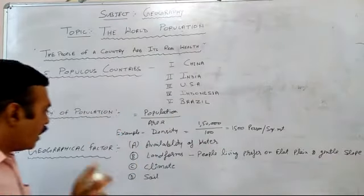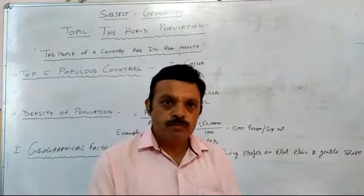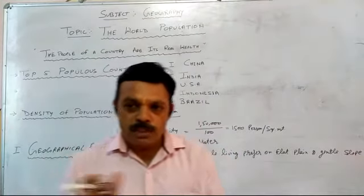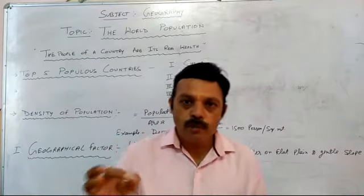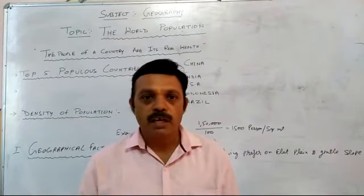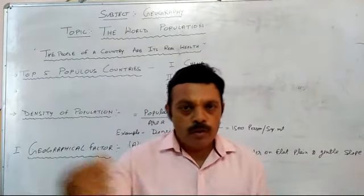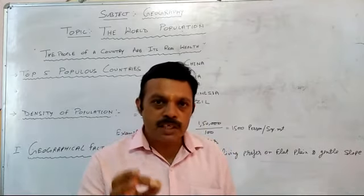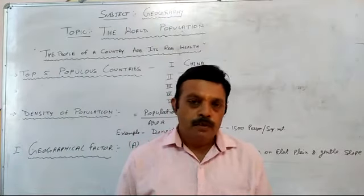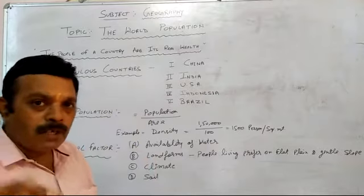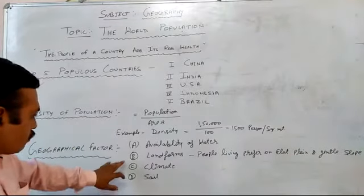The second factor is availability of water. Water is an important factor for population growth — it is the basic need of human beings. Without water, we cannot live, as you know. So water availability is the most important factor for population density and population growth.